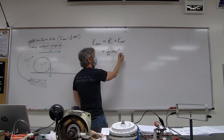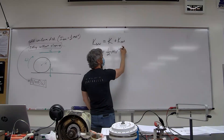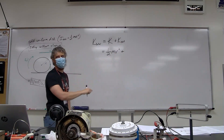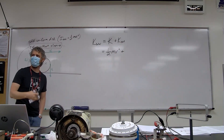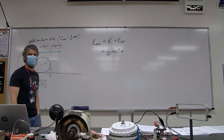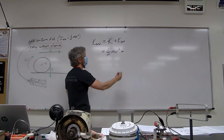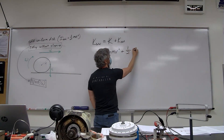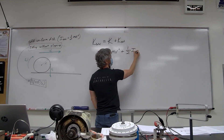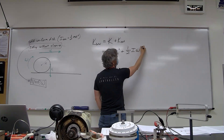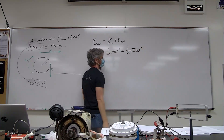Let's plug in: translational kinetic energy is ½mv², where v is the translational velocity of the object as it's rolling. For rotation we write the same equation with our substitutions: ½ times the rotational inertia of the disk times its angular velocity squared, ½Iω².